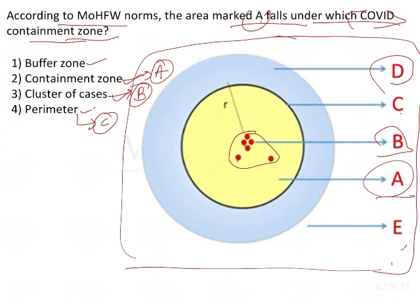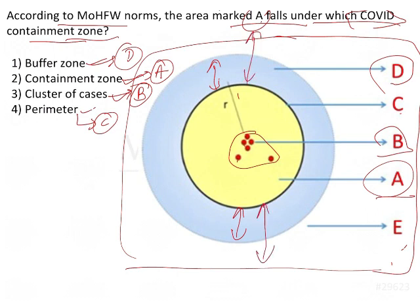Another one is D. D is marked in light blue — this is the buffer zone. The buffer zone is the area around the contaminated zone; they leave a gap around the perimeter depending on the area and congestion. In heavily congested areas, they increase the buffer zone. If it is a well-gated community like a residency, they will reduce the distance. So this is the buffer zone.